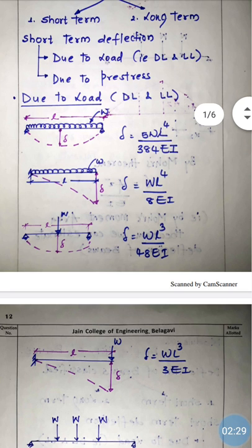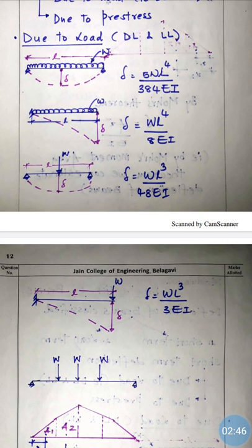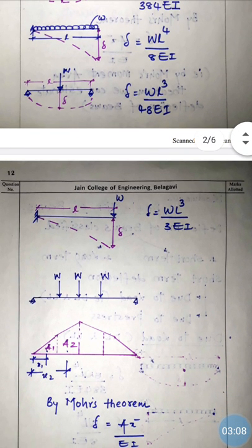For a cantilever beam — one end fixed, one end free — loaded with uniformly distributed load, deflection is maximum at the free end: δ = WL⁴ / 8EI. For a simply supported beam with a point load at mid-span, maximum deflection occurs at mid-span: δ = WL³ / 48EI. For a cantilever beam with a point load at the free end, maximum deflection at the free end: δ = WL³ / 3EI.